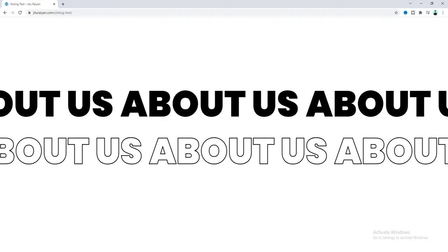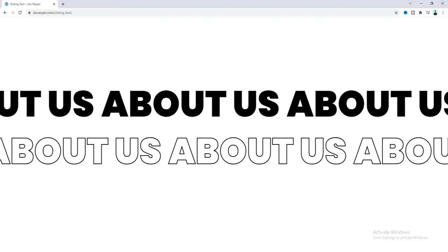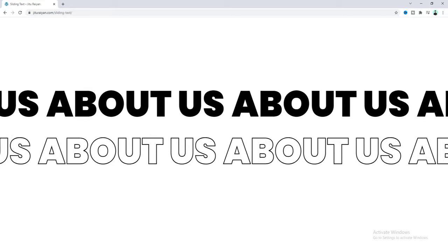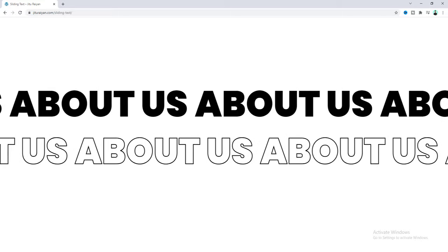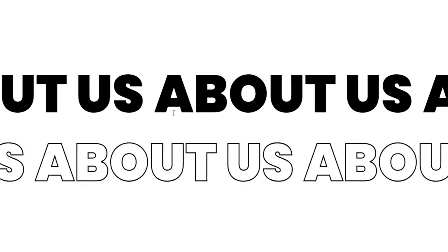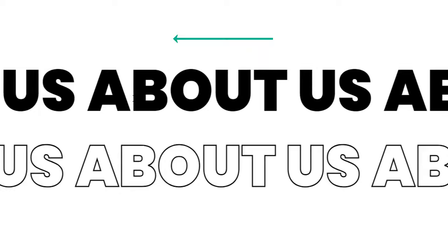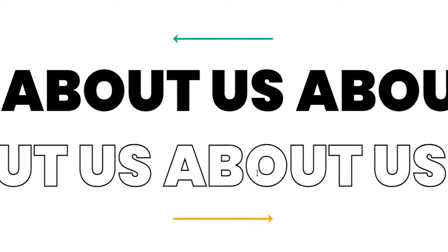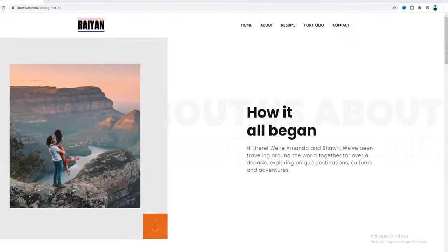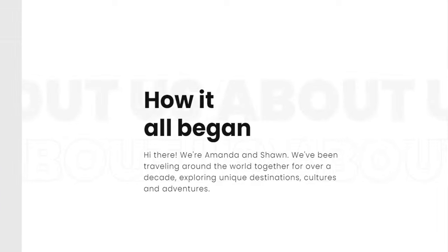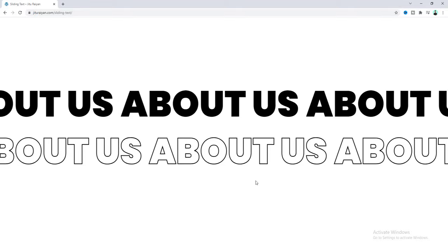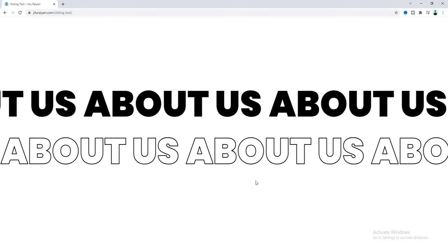Hey, what's going on guys! Today I'll show you how we can make this kind of auto sliding text in Elementor. We will make two sliding texts — the first one goes from right to left, and the second one from left to right. You can also use this sliding text as a background of any section, which makes your page design more creative. So without further ado, let's see how we can make that.